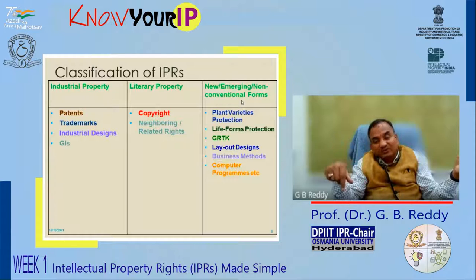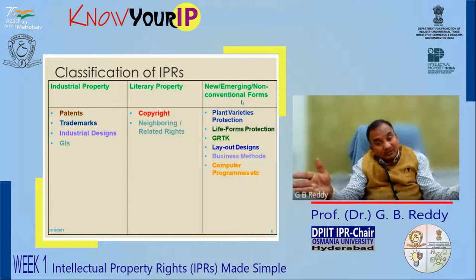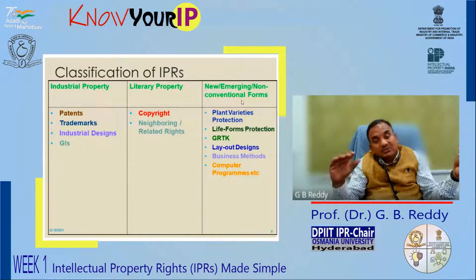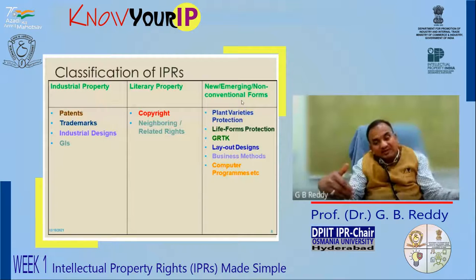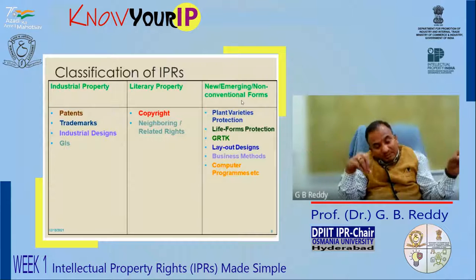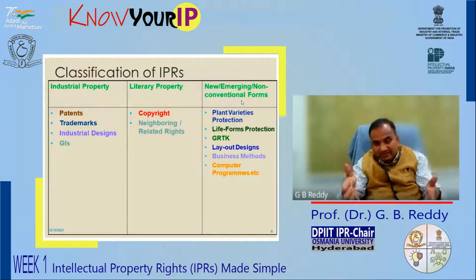In the 21st century, emerging forms of intellectual property include new plant varieties and life forms protection. Life also can be protected — not the essential biological processes, but something which is genetically modified or engineered, whether a bacterium, plant, or animal. We have seen the Harvard Oncomouse. Genetic resources and traditional knowledge also have wonderful capacity to be protected as intellectual property.